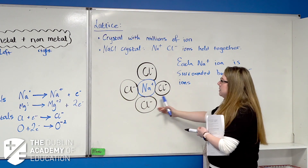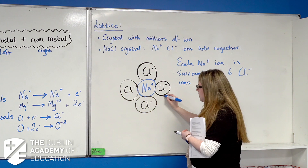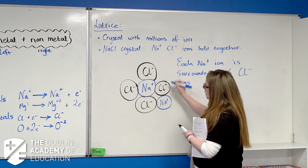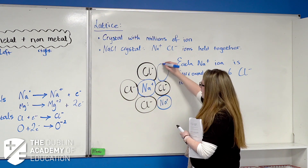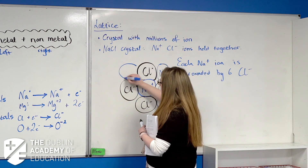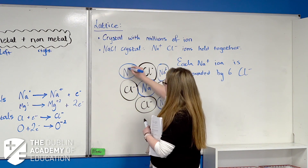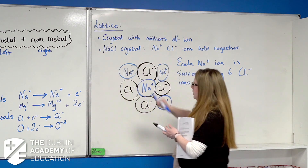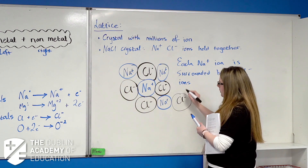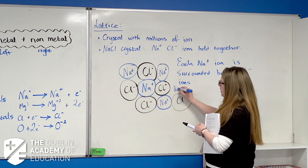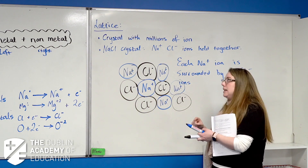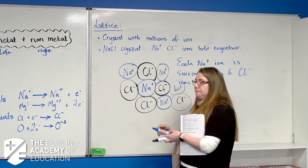If I continue this pattern, the next sodium ion would be here, here, and there; then I'd have a chlorine here and a sodium here, and so on. It repeats over and over again throughout the entire crystal lattice.